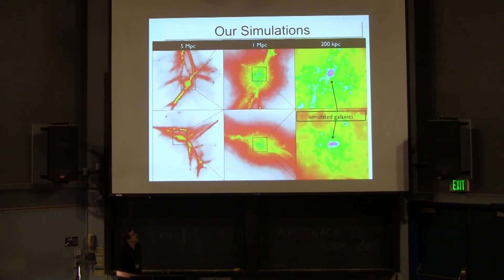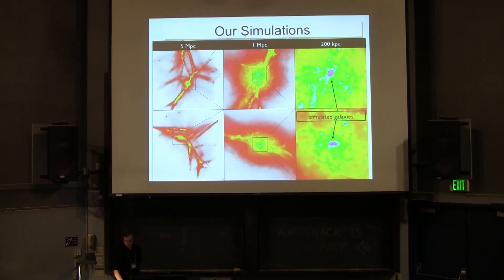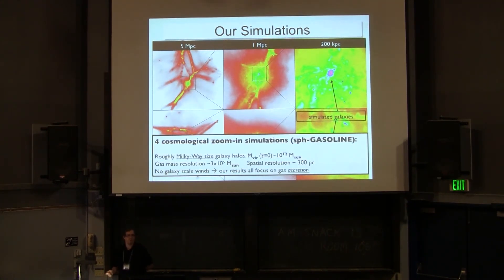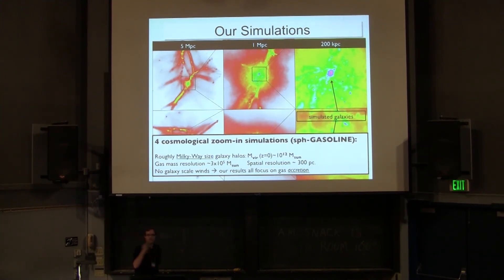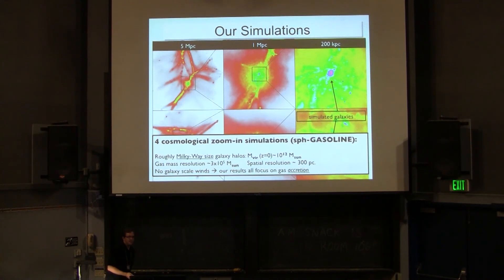To do this, we run hydrodynamic cosmological zoom-in simulations. Here's a snapshot of two of them where you're zooming in from the large-scale structure, gas density contours along the filaments, into the actual galaxies themselves. We've run four in total - they're all roughly Milky Way-sized halos. These simulations do not have the necessary feedback to produce large galactic-scale winds or recycling; we want to focus on what's happening to the gas as it's accreting and understand that first, before tackling the more complex picture of inflow, outflow, and recycling.